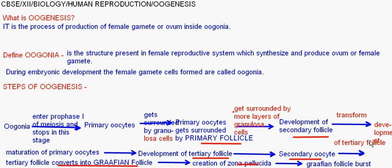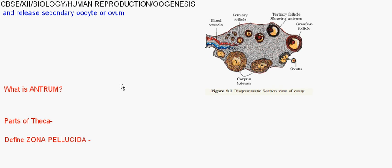What is antrum? When the secondary follicle transforms into tertiary follicle, it is filled by a fluid-filled cavity. This fluid-filled cavity present in the tertiary follicle is called antrum.